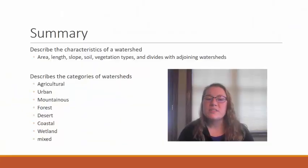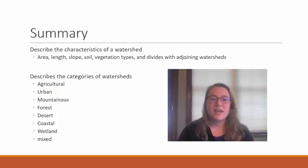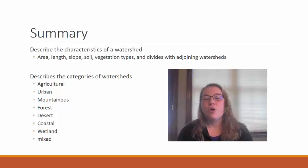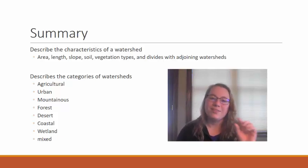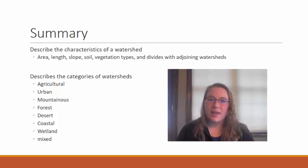In summary, you need to know the characteristics of a watershed: area, length, slope, soil, vegetation types, and divides with adjoining watersheds. You also need to know about the categories of watersheds. Please send any questions, and I hope that as you watched this video you were able to learn something.